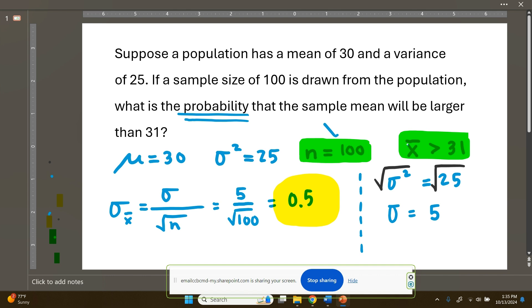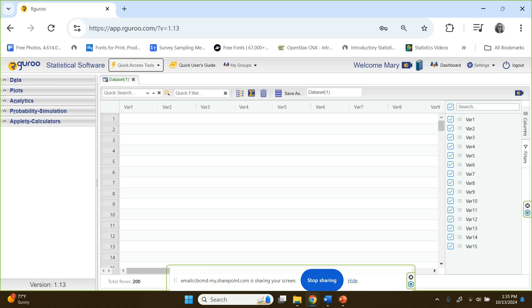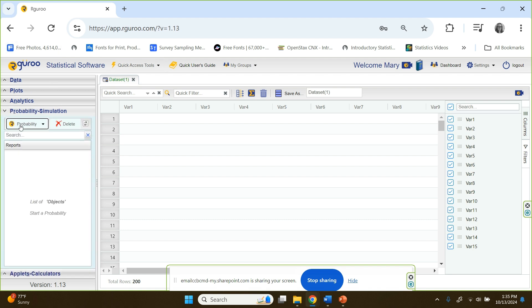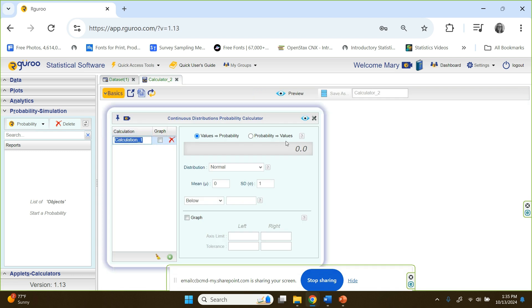So let's get to our guru. Here we are. Let me open up the probability simulation pane. We'll click on probability drop-down, choose probability calculator and continuous. Leave the bubble here, values to probability. The default is normal. We'll put our population mean there. If you notice, it says mean and also has that mu, Greek symbol mu, next to it. We're going to put our adjusted standard deviation here, which was 0.5.